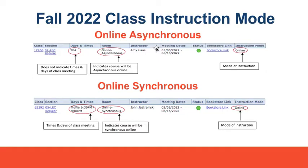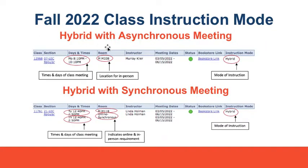For online asynchronous, mode of instruction will state online; room number will not be indicated; days and times will not be indicated. Online synchronous will state mode of instruction online; room will not be indicated; days and times will be indicated. For hybrid asynchronous courses, mode of instruction will state hybrid; room will be indicated; days and times will be indicated. For hybrid with synchronous meeting times, mode of instruction will state hybrid; room number will be displayed; days and times will be displayed.